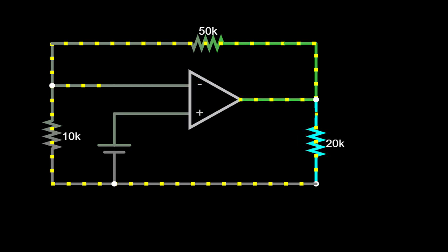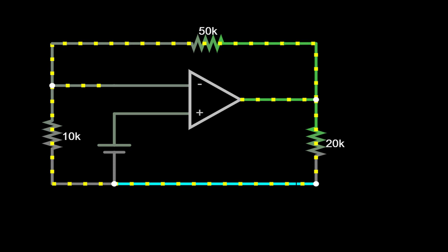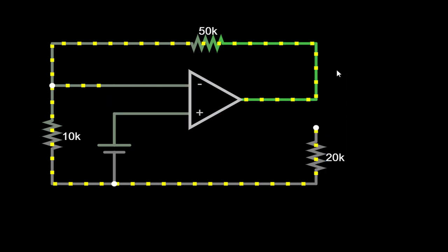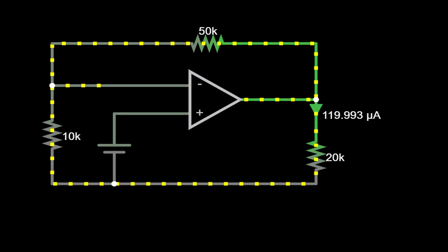This resistor value is 20 kΩ. To find the current through this resistor, we will add an ammeter. So we remove the wire and add an ammeter in series. The current through this resistor reads 119.993 μA.